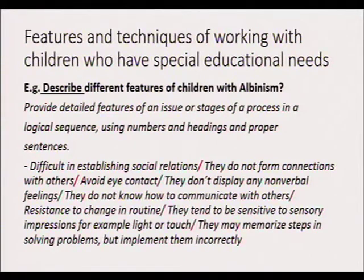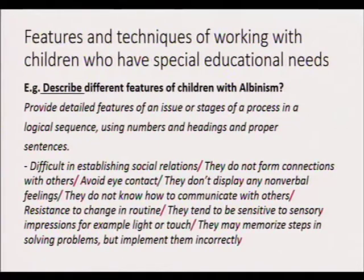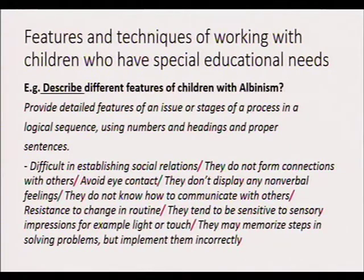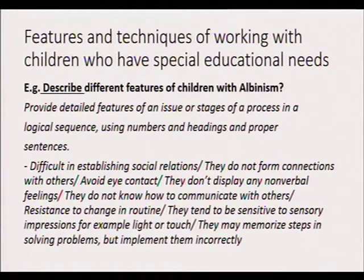Another point — this is actually Unit 5 and Unit 8, which were also problematic for most of you. Unit 5 talks about the features and techniques of working with children with special educational needs. There are different special educational needs, and the focus here is: how can I get the red flags? How can I diagnose that this child has albinism, Down syndrome, or autism? And secondly, how do I support this child? I advise you to summarize and do a mind map — write down albinism, look at five features, and then how can I support this child.